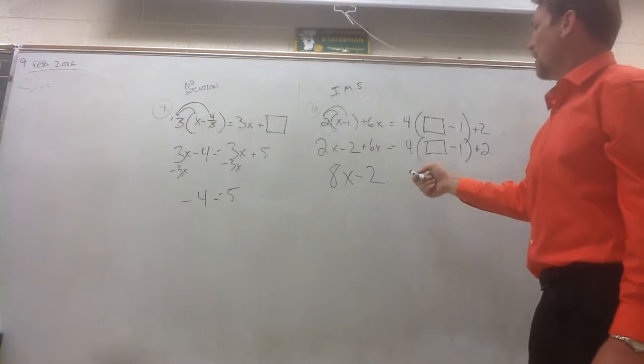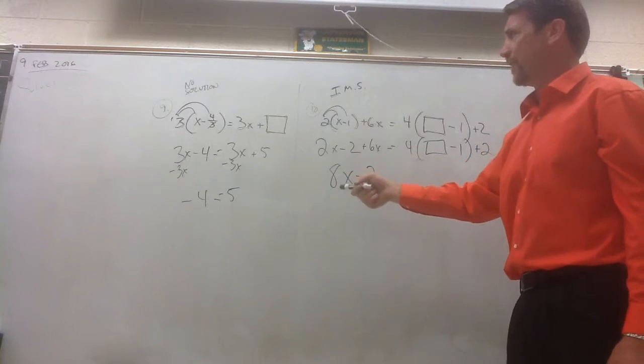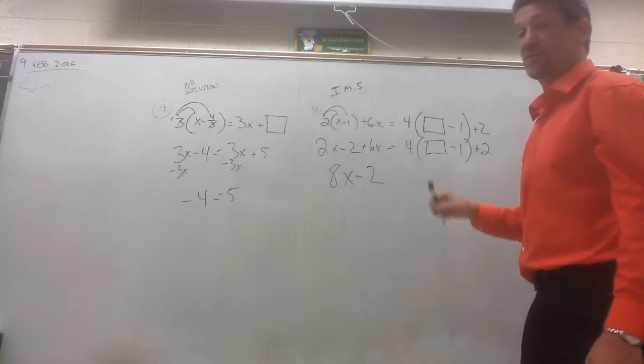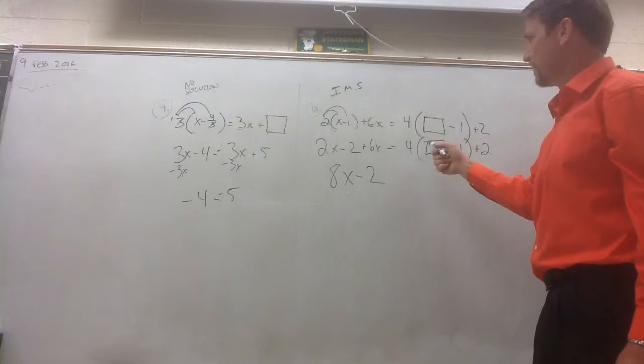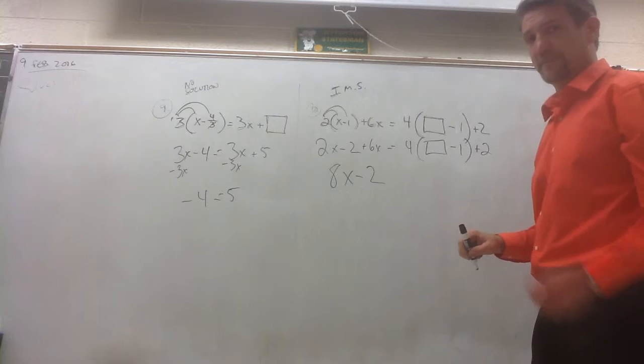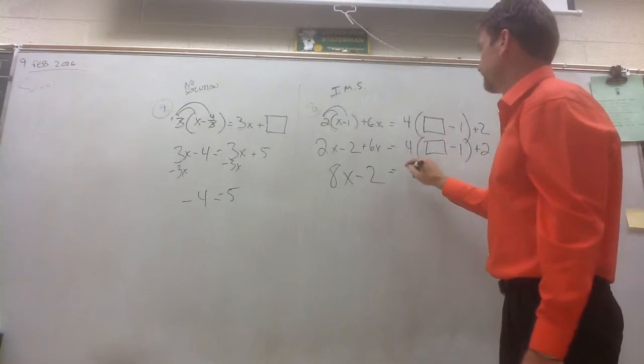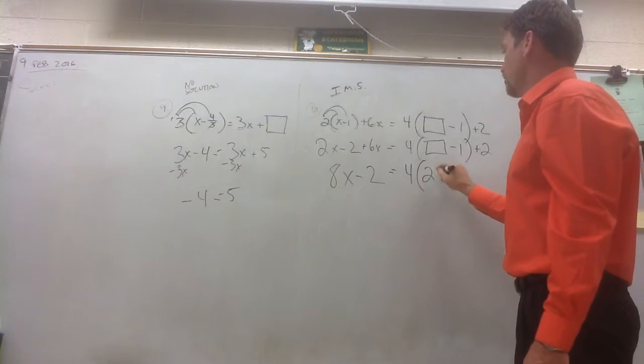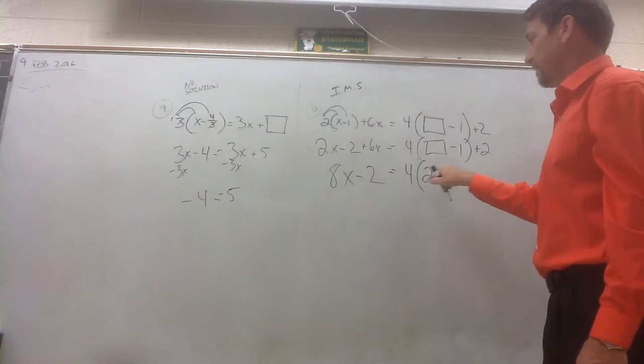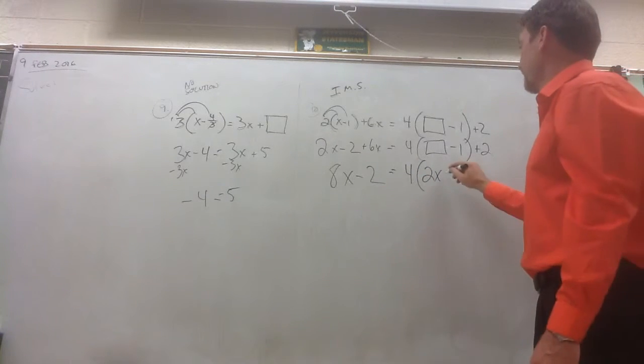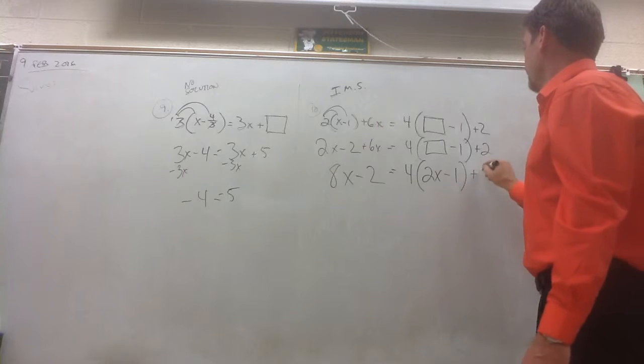Take a look here. If I have 8x's over here, I'm going to need 8x's over here. What goes in the box to give me 8x's? 2x's. 4 times the quantity 2x. That'll give you 8x's. Minus 1 plus 2.